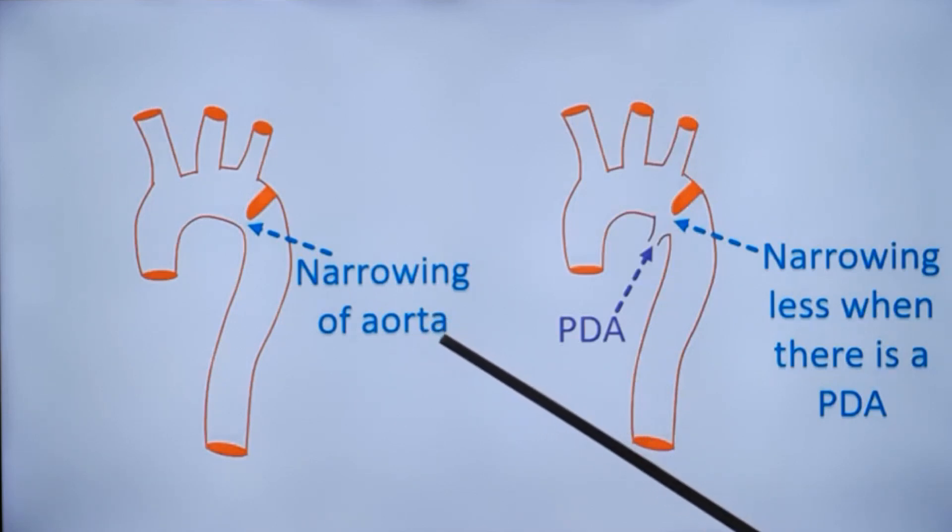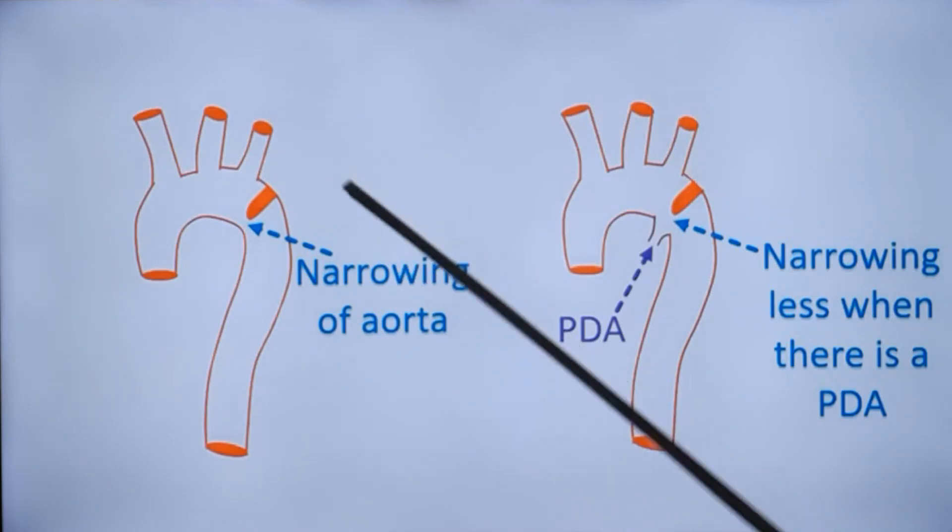That's also another reason why we should not forget to do a suprasternal view in infants being evaluated for congenital heart disease and also in those who are evaluated for heart failure.